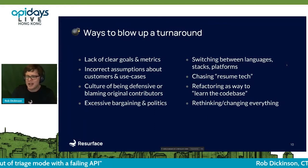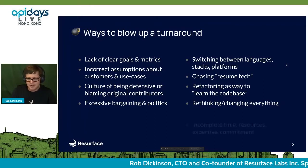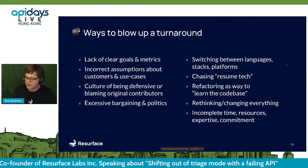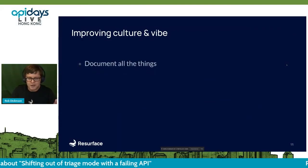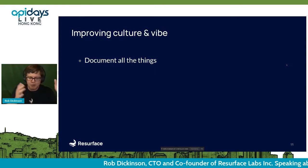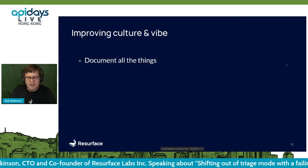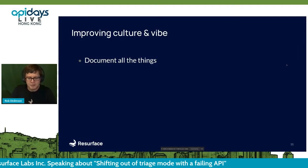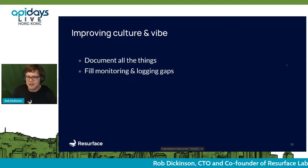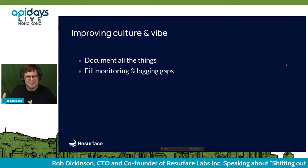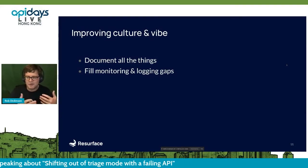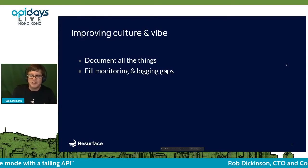What I'm going to give you is a really cohesive framework for changing what you need to change without changing too much, and getting the best experience out of this turnaround. To improve your culture and your vibe, the first thing you need to do is document what you have now. That sounds backwards — if we're getting ready to change everything, why document it? It's through that process of documenting and really understanding what you have that you realize where your gaps are.